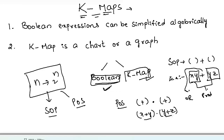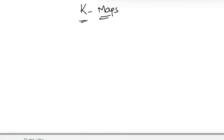So in SOP form, between variables the AND operation is used, and the relation between two AND operations is OR. In POS form, between literals the OR operation is used, and the relation between the sum terms is AND. That is the representation of SOP and POS. Now let's see the representation of K-map.